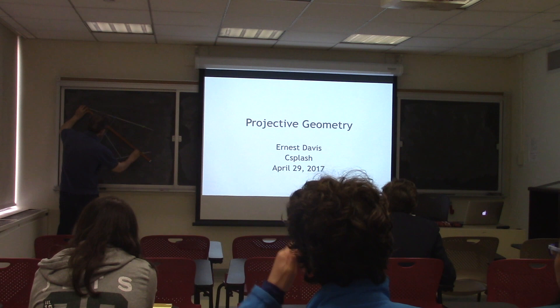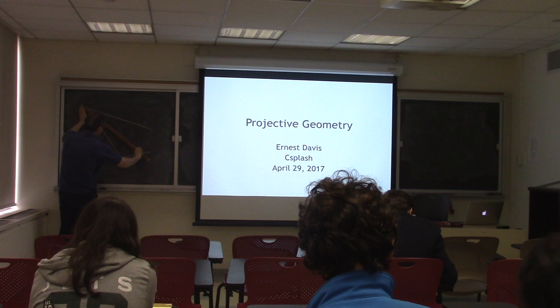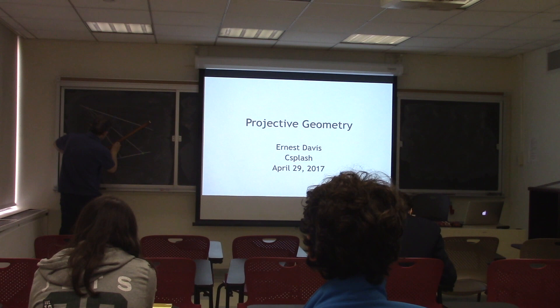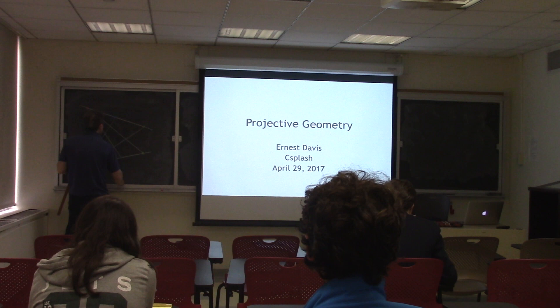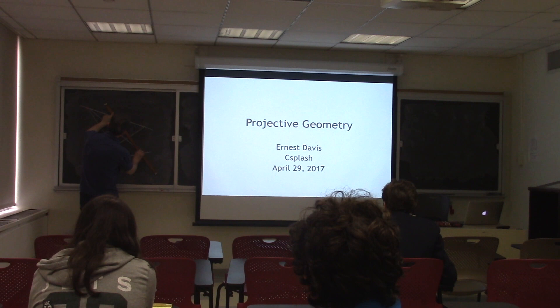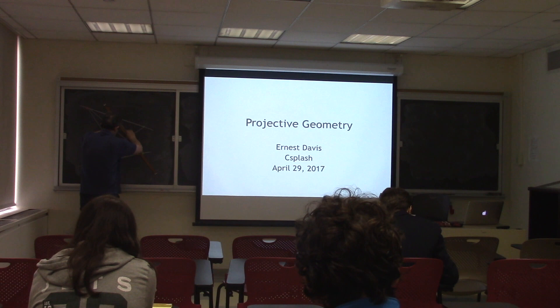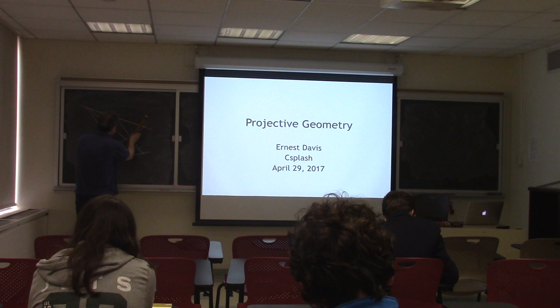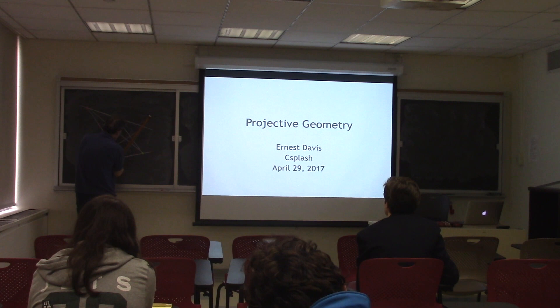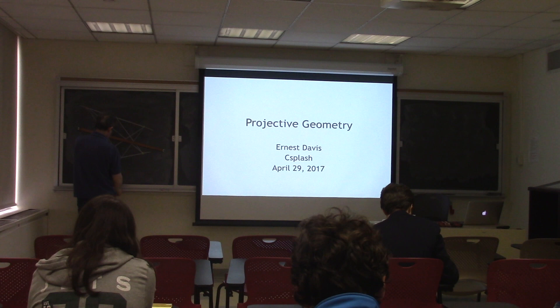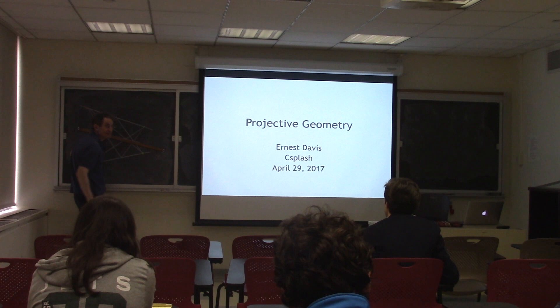And then red to green here crosses red to green there, and we'll mark that with purple. And then, up to the accuracy of this kind of mechanism, these three purple points are collinear.